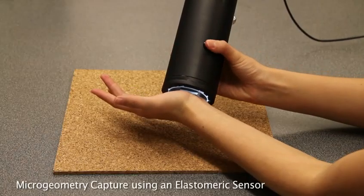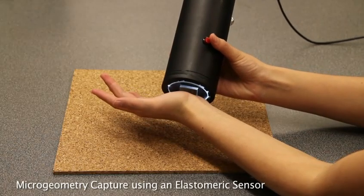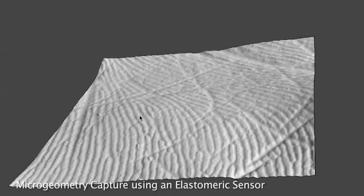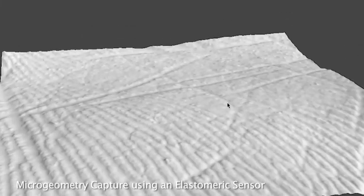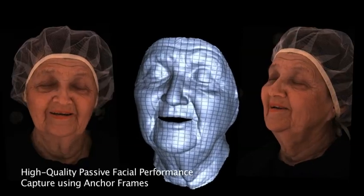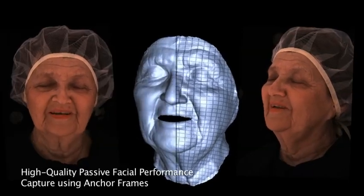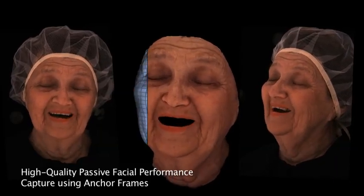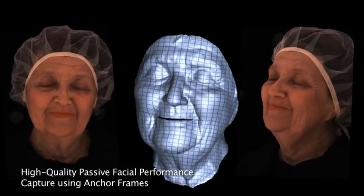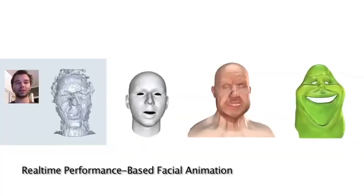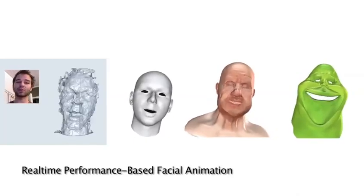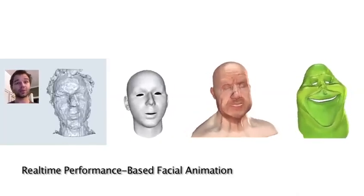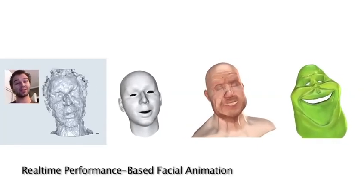A new sensor device can capture microscopic geometry like the fine texture of human skin with remarkable fidelity. A passive markerless facial performance system robustly captures performances by identifying repetitive subsequences called anchor frames. A probabilistic optimization process robustly tracks complex facial expressions in noisy color and depth imagery and maps them onto digital avatars.